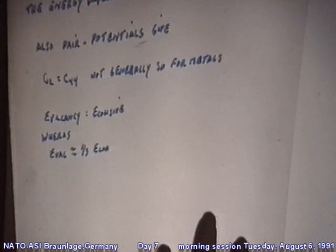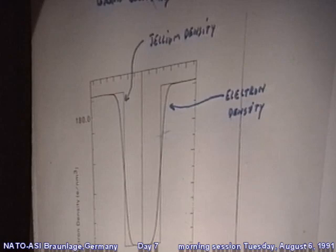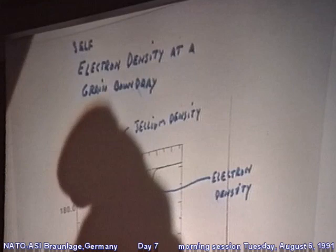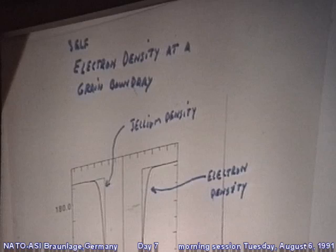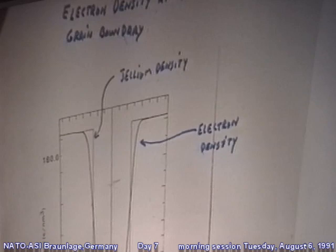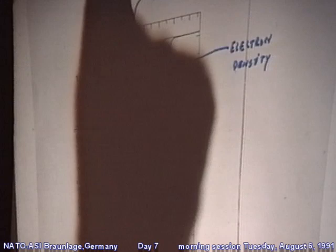The problems with pair potentials are that they aren't correct for metals. As Professor Landman indicated, the energy for metals depends on the electron density. They don't give the correct relationship for the shear constants, and in addition, the vacancy formation energies come out equal to the cohesive energy, whereas the vacancy formation energy in a metal is actually of the order of one third of the cohesive energy. This is a calculation John Smith and I did about six years ago for a grain boundary — treated in the jellium model — and you can see a very complicated distribution of electron density at the interface that no pair potential can treat.